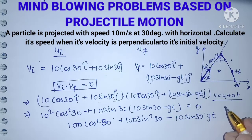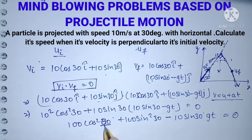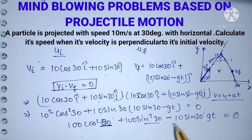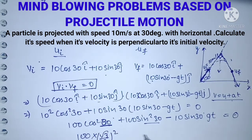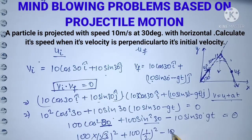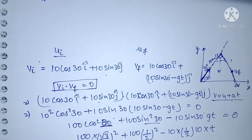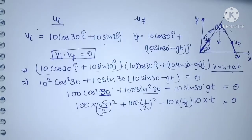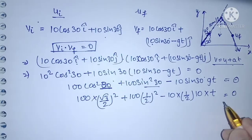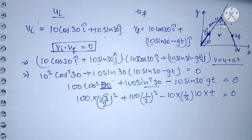Expanding: 100 cos² 30° + 100 sin² 30° − 10 sin 30° × gt = 0. The value of t is not given in the question so it remains in terms of t. Substituting cos 30° = √3/2, sin 30° = 1/2, and g = 10: further solving is left as homework. The conceptual part has been explained — let's proceed to the next question.